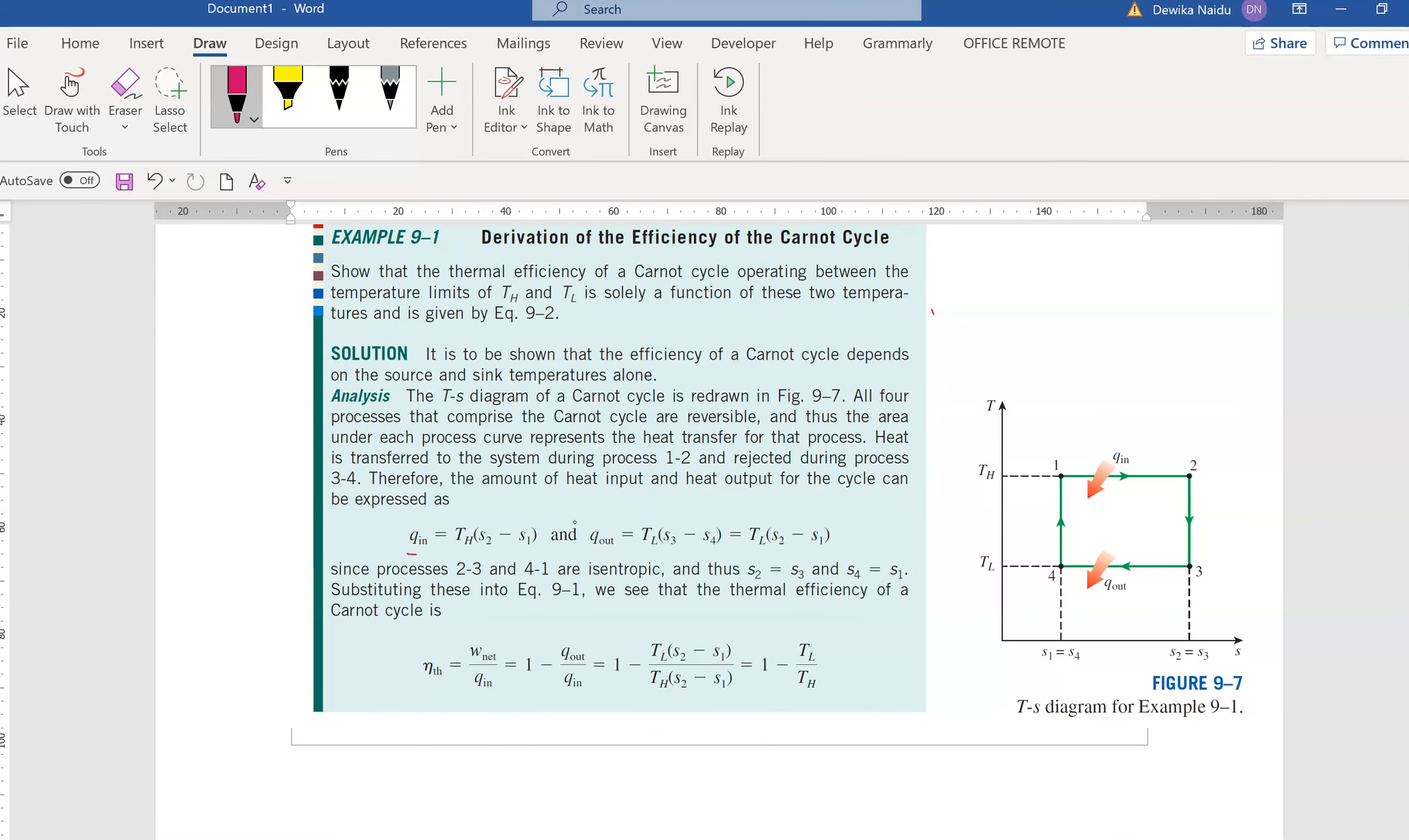Show that the thermal efficiency of a Carnot cycle operating between the temperature limits of TH and TL is solely a function of two temperatures given in equation 9.2. So you need to prove this formula. Coming back to here. What do you have here? Q in is actually happening between 1 to 2. So you take S2 minus S1 multiply with TH because TH is constant. And what is Q out? Q out will be happening between 3 and 4. That's why it's S3 minus S4 multiply with TL because that is the value that's constant here.